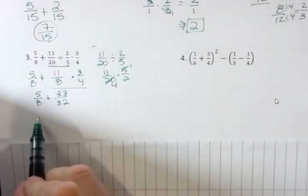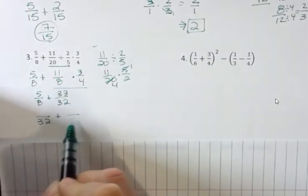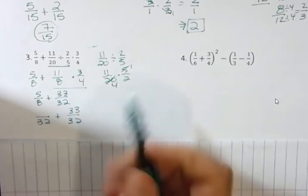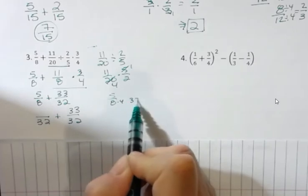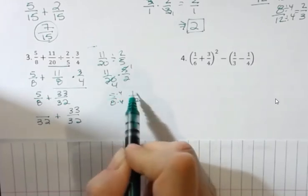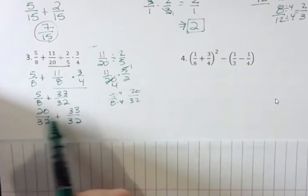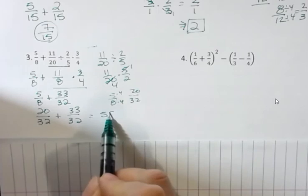I'm going to rewrite this. The common denominator is 32, so the second one's not changing. But what about 5 eighths? 5 times 4 is 32, so 5 times 4 is 20. Now I'm ready to add those together. 20 plus 33 is 55 over 32.